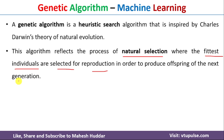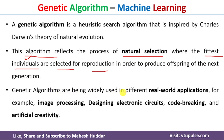Given a set of individuals in a natural selection, we select the fittest individuals and use them to reproduce new offspring for the next generation. This same technique has been incorporated in genetic algorithms, which are widely used in different real-world applications such as image processing, designing electronic circuit boards, code breaking, artificial creativity, and so on.